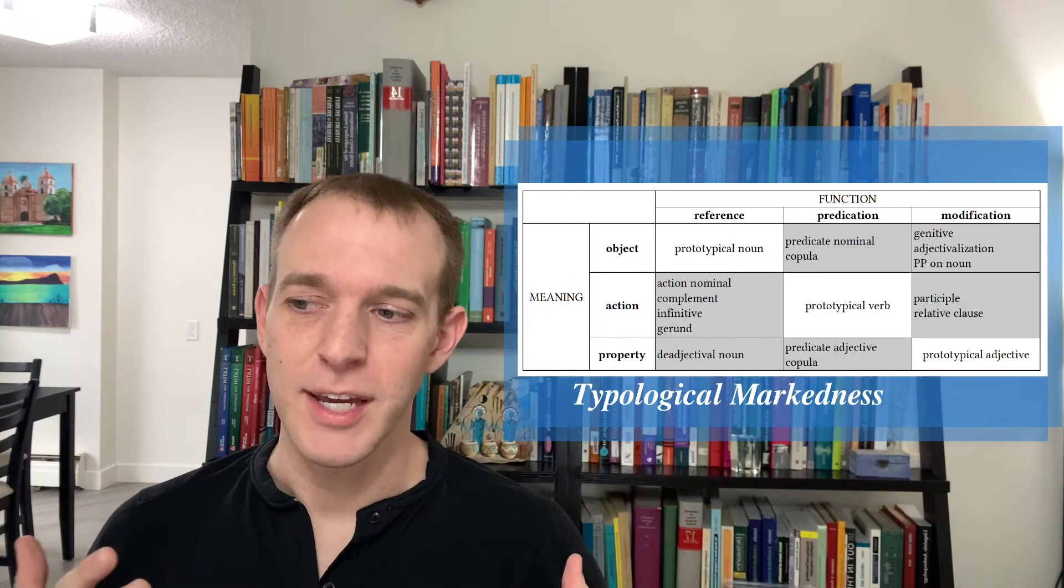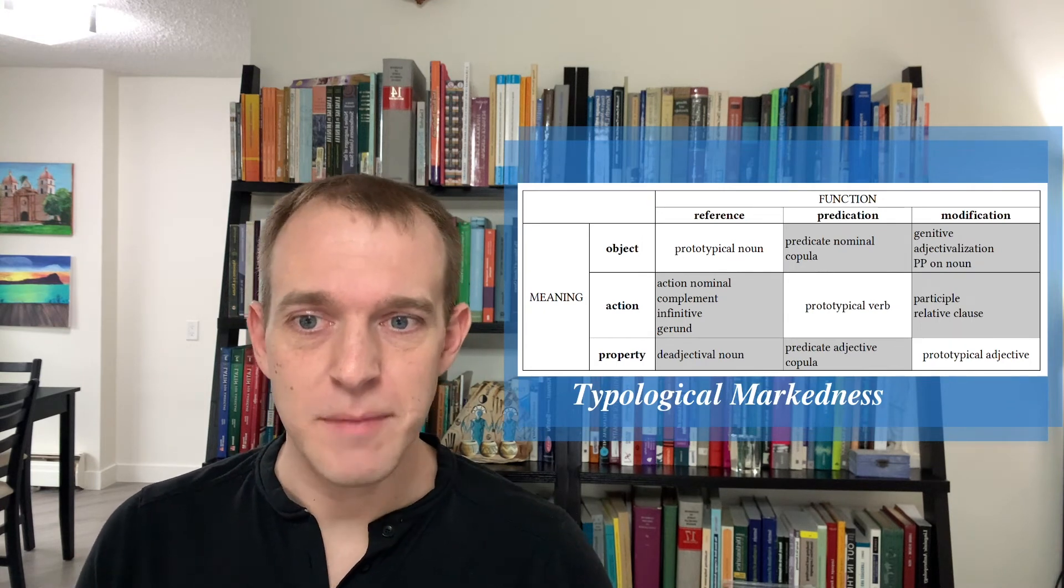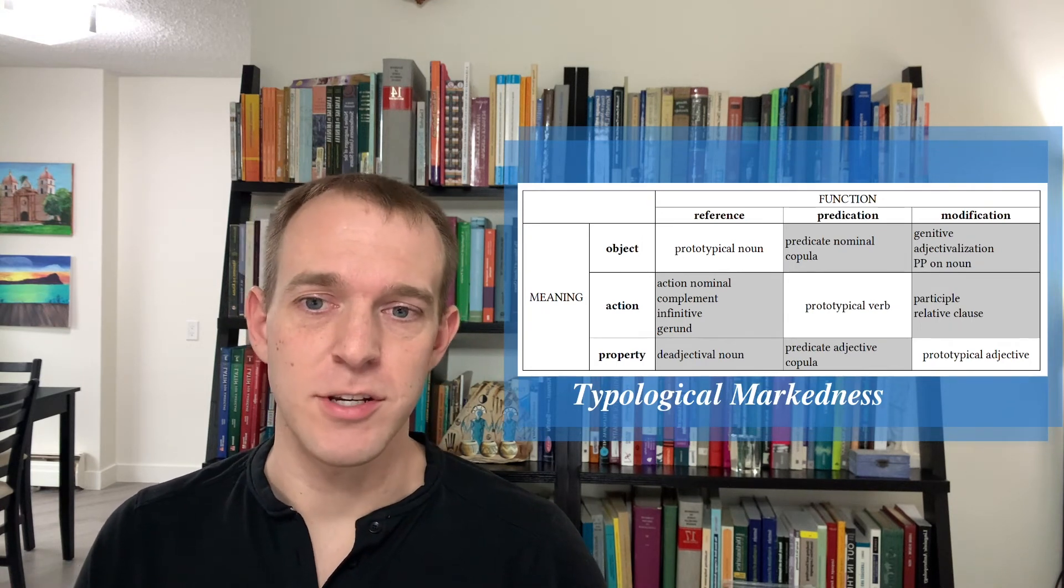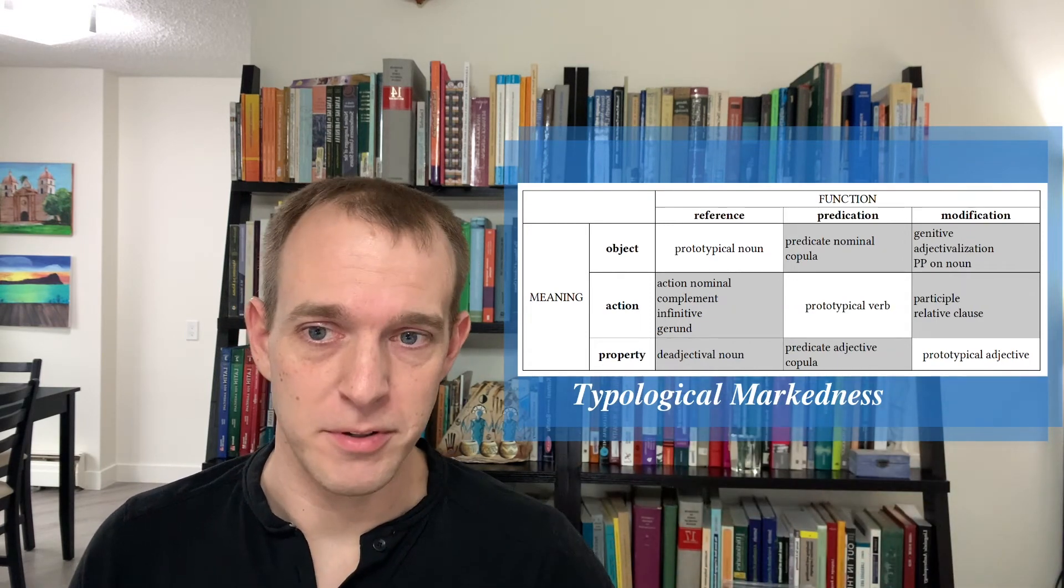it might have some marking on it, but an object being used to modify is going to have at least that much marking, probably more. And so it's this interesting implicational universal. So this is a very complex, multidimensional, implicational universal about if something is marked for a certain use, then it's going to be at least as marked as a more prototypical use.